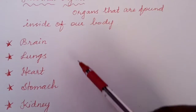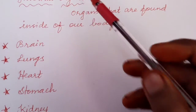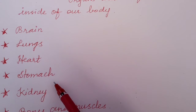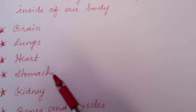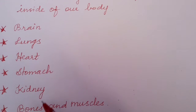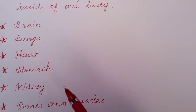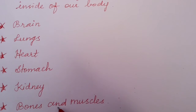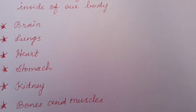So today let's know about the internal organs: stomach, kidney, and bones and muscles. Let's see these internal organs one by one.